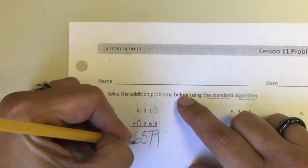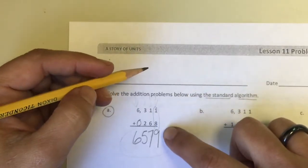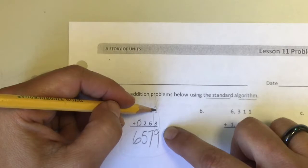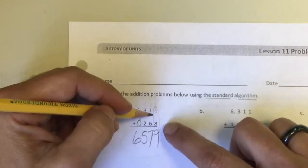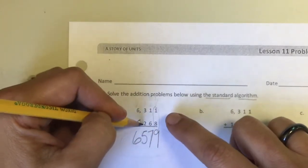So I want to go ahead and double check and make sure that I'm going to get the same answer again. 1 plus 8 is 9, 1 plus 6 is 7, 3 plus 2 is 5, and 6 plus 0 is 6.